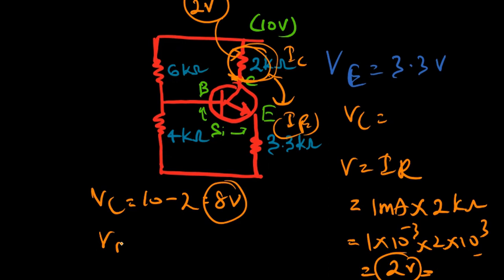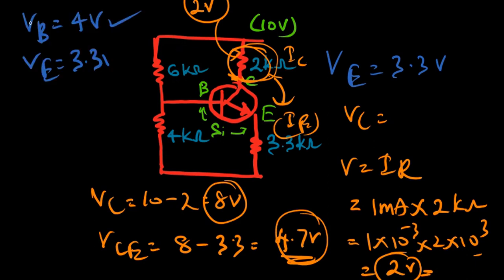Now we can find VCE, so VCE equals 8 minus 3.3, that is 4.7 volts. Now we have all the values they're asking from us: VB as 4 volts, VE as 1 milliampere, and IC.